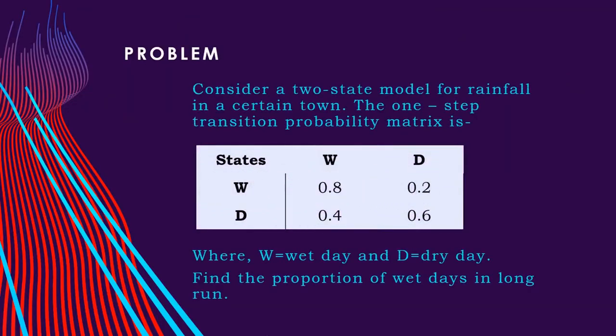Now let us look at the following problem. Consider a two state model for rainfall in a certain town. The one step transition probability matrix is, we have considered here states W and D where W is wet day and D is dry day.